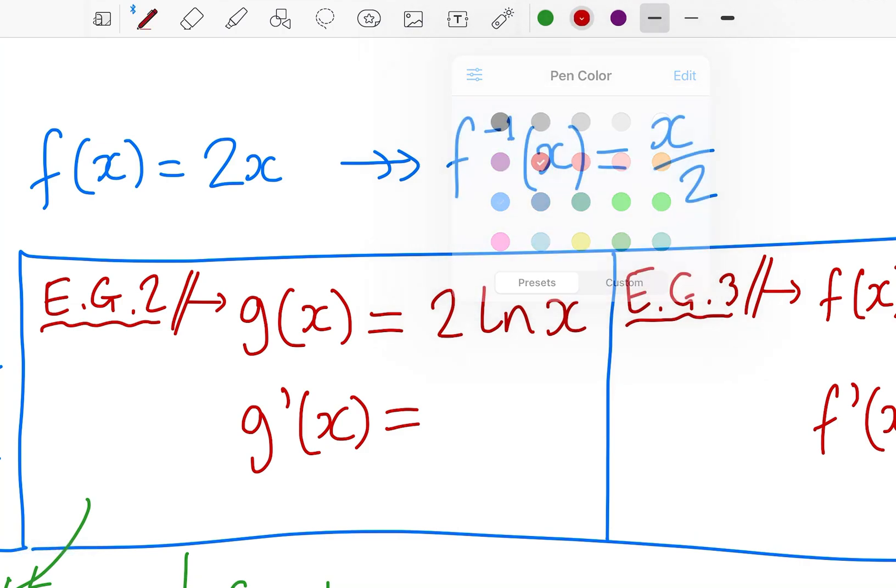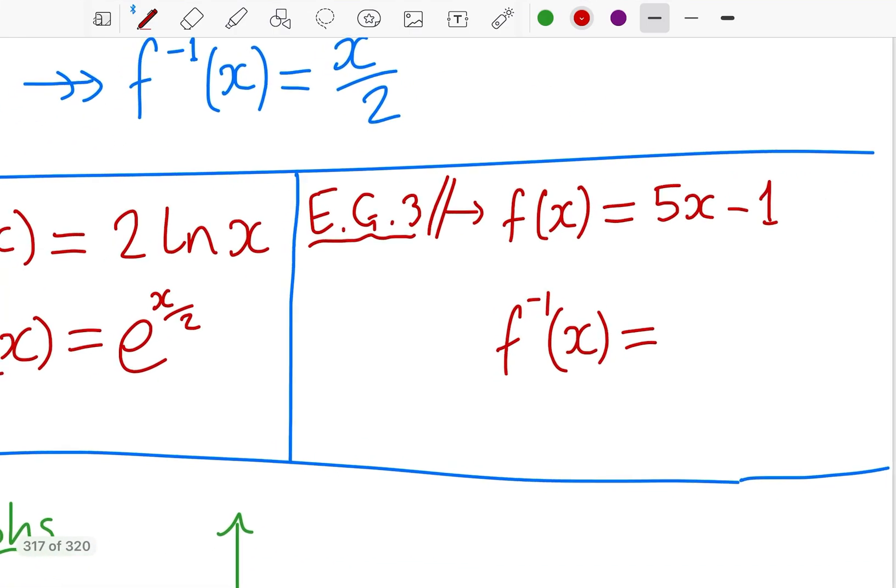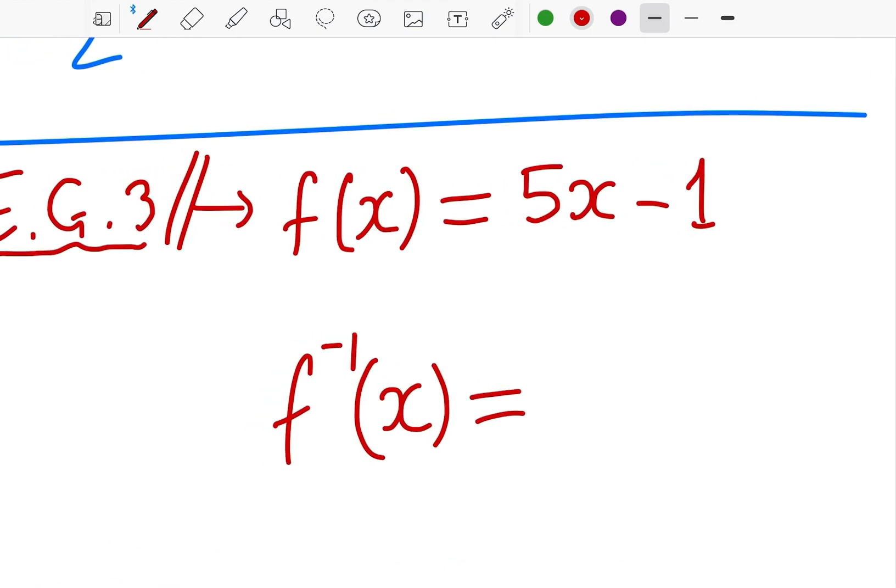What about some trickier functions though? For example, 2 times the natural log of x. If I have a set of inputs and outputs there and I want to do the inverse, the inverse function would be e to the power of x over 2, and that would be the exact inverse. Whatever inputs went to outputs, the infinite set of pairs, I could go in the opposite direction with this function here.